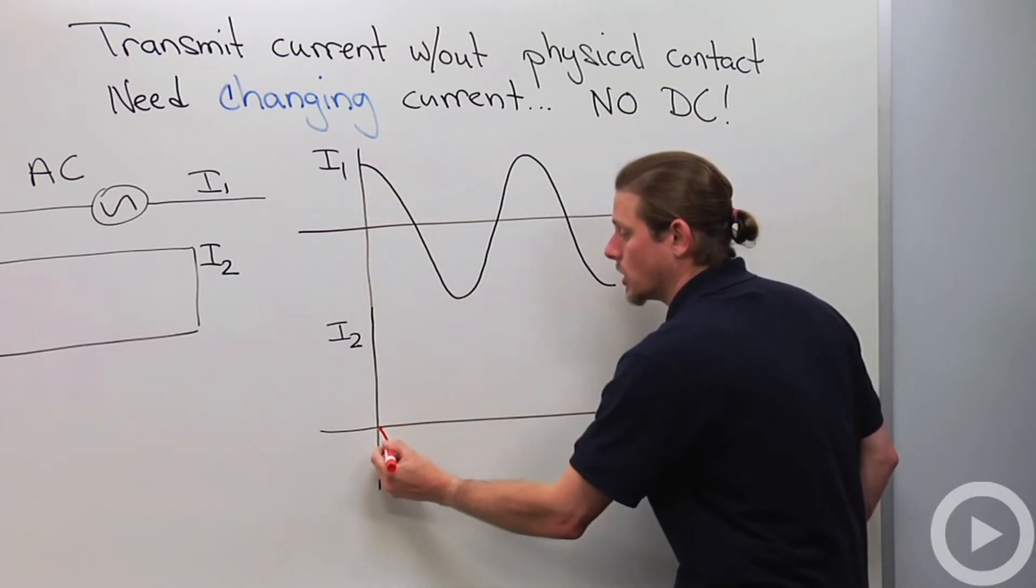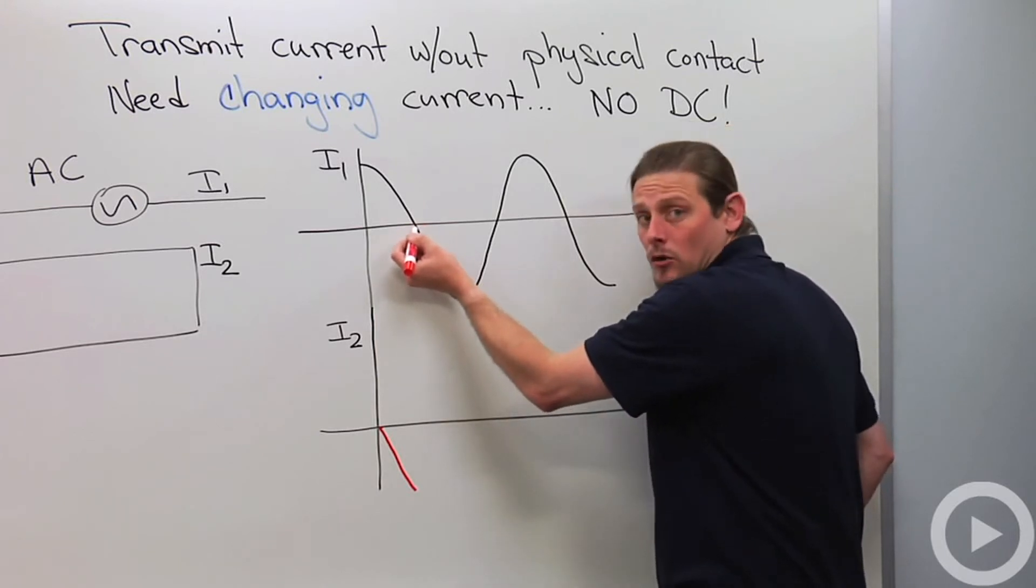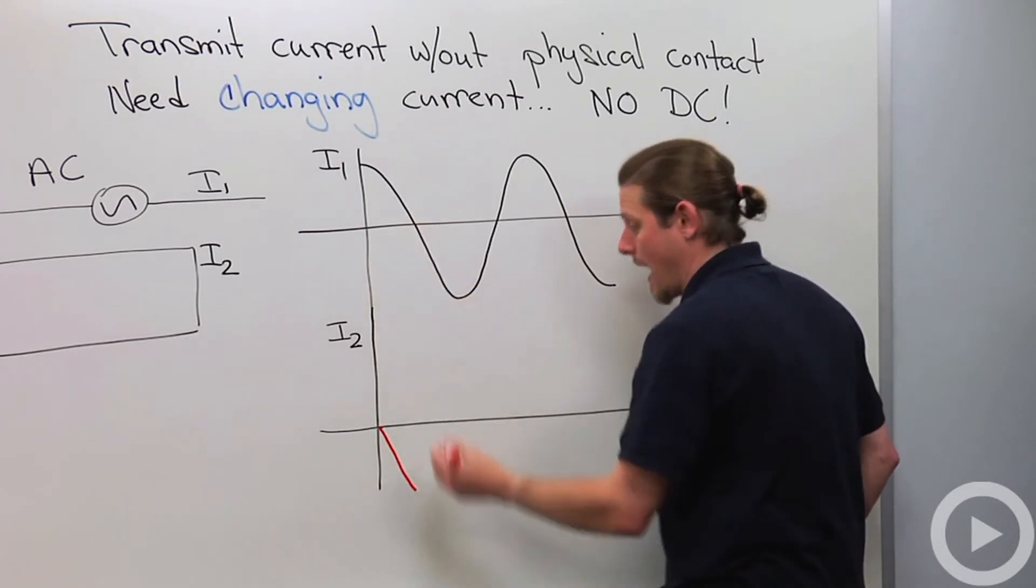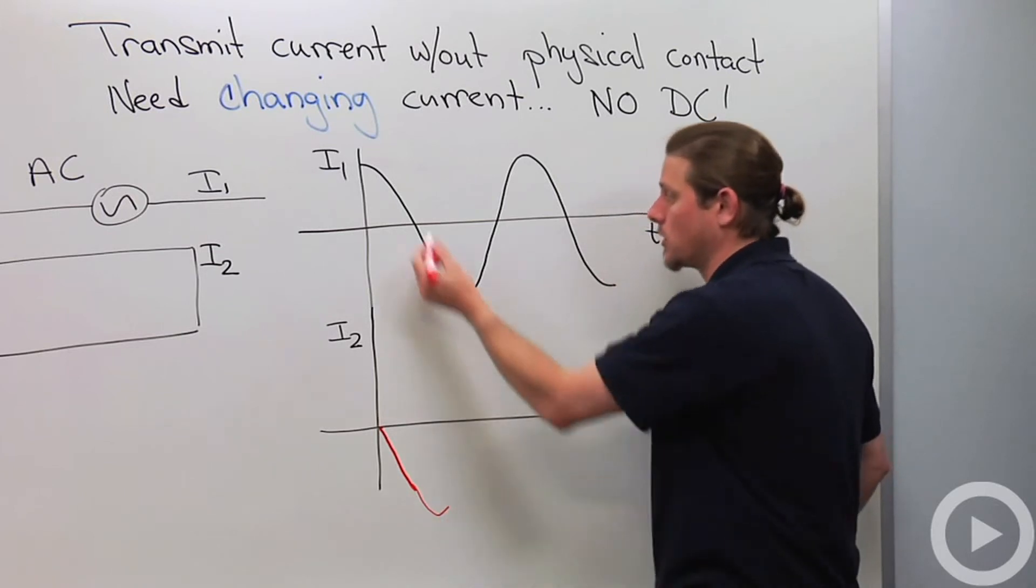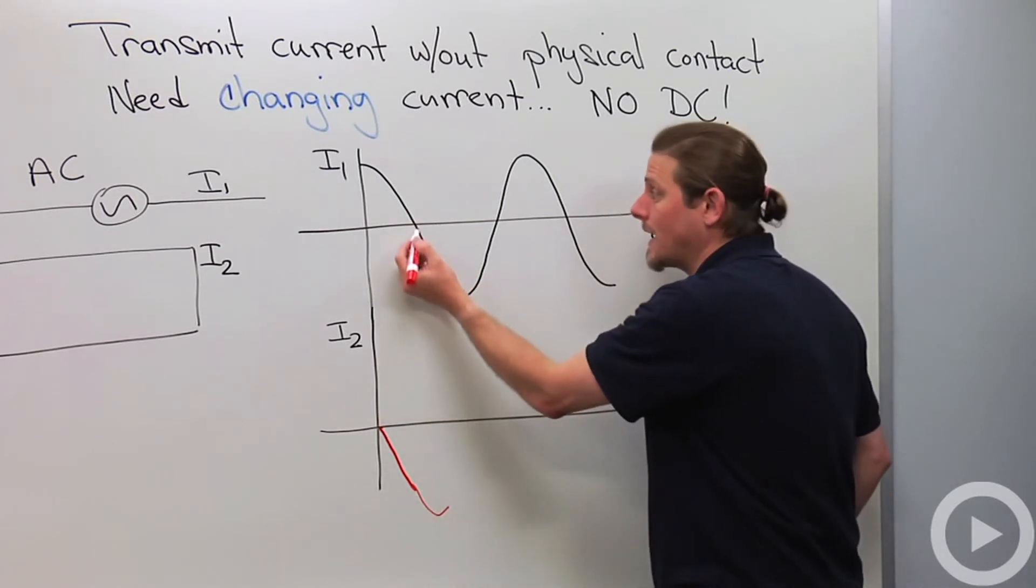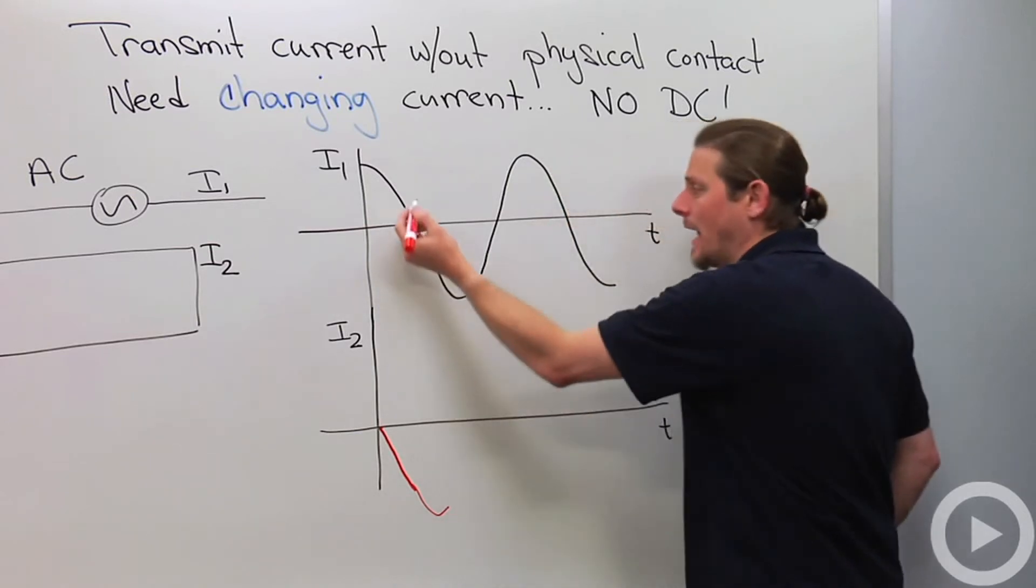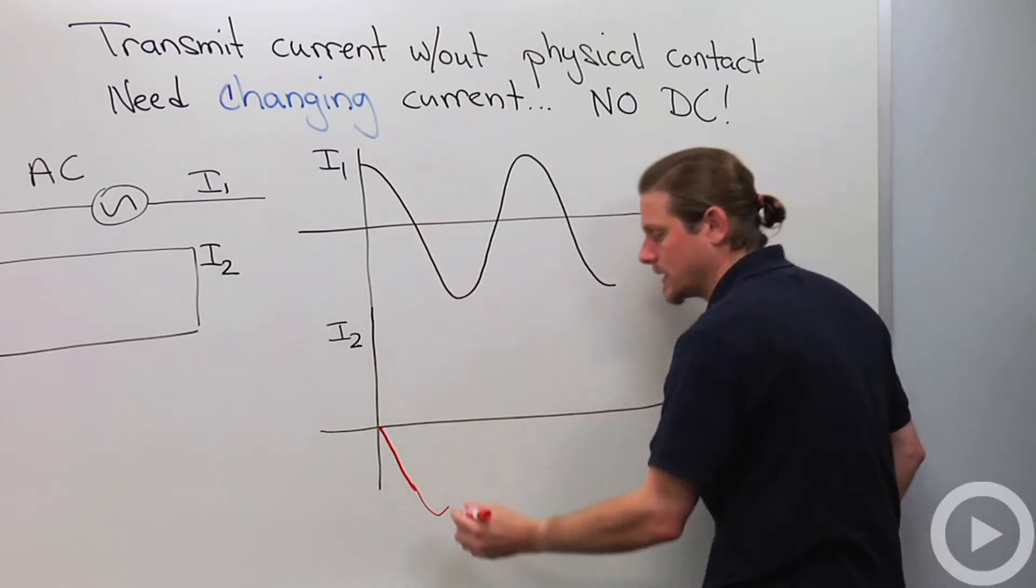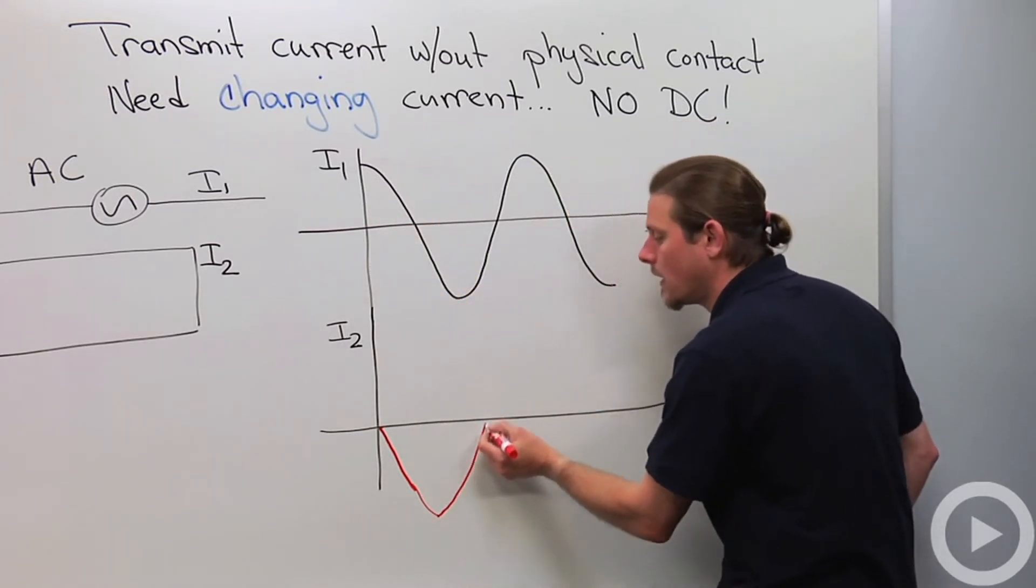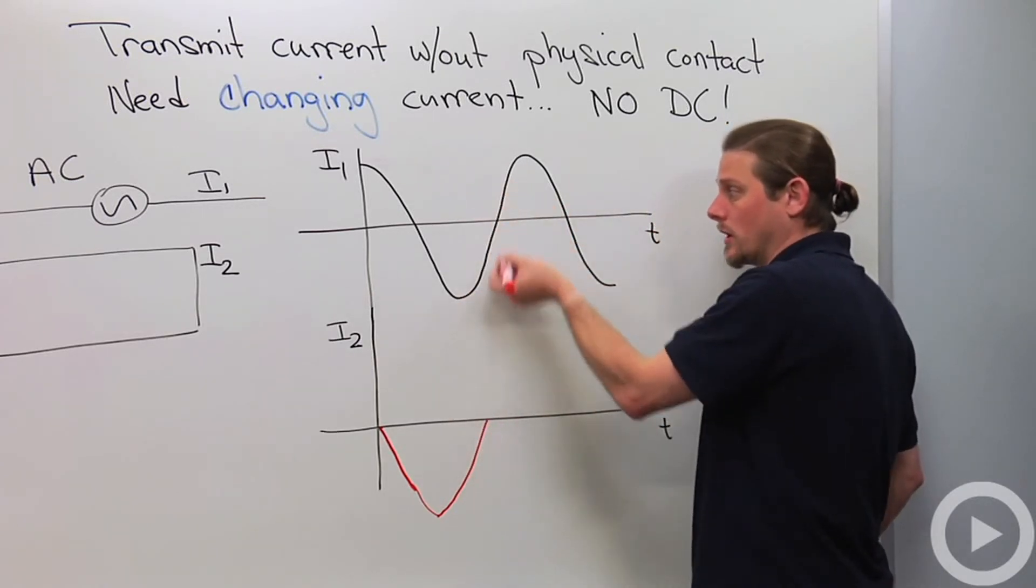Here it's increasing at the maximum rate, so that means maximum current in the second loop right here when this current is zero. Then it keeps on decreasing, so this is still negative until here where it's going to start to increase.